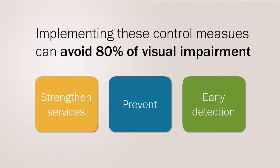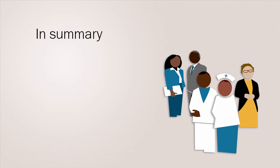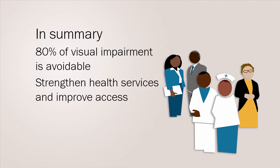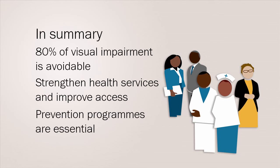Implementing these control measures can avoid about 80% of visual impairment. In summary, epidemiology allows eye health workers to understand the burden of need and the main causes and determinants of visual impairment at the global and local levels. We know that 80% of visual impairment is due to avoidable causes and that it is mostly found in low and middle income countries. Strengthening services, improving access and addressing inequity at the local level are an urgent priority for global eye care, and prevention programmes are essential to achieve these goals.